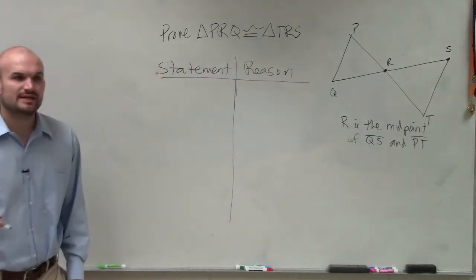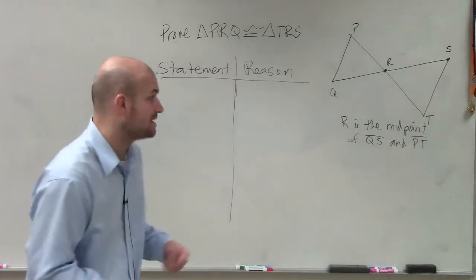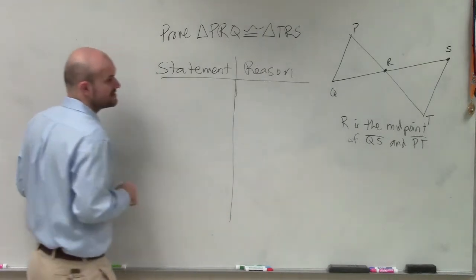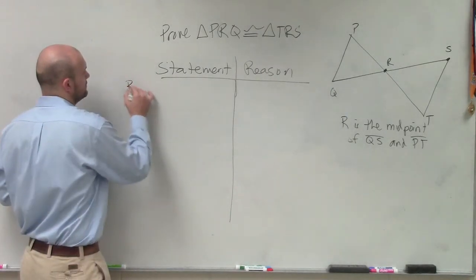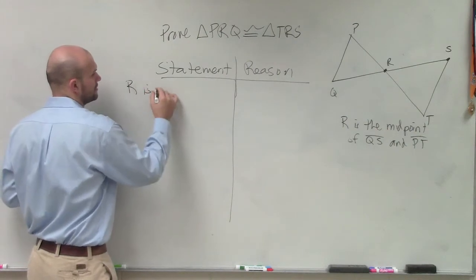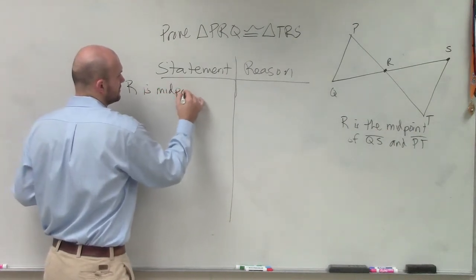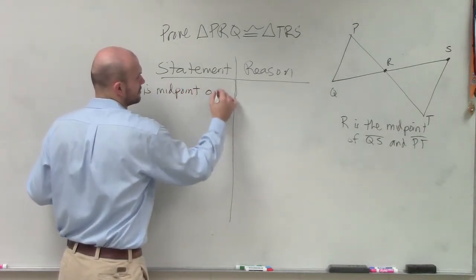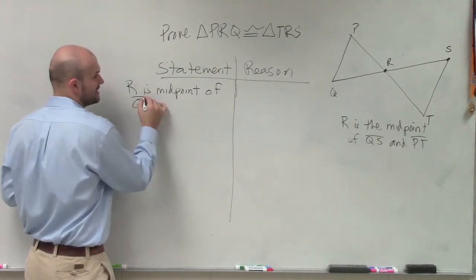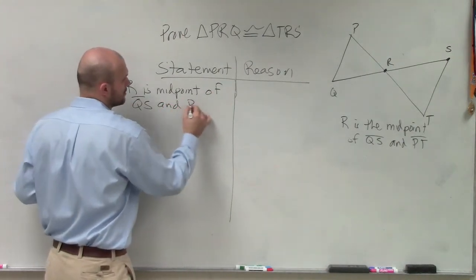Again, ladies and gentlemen, what we need to do is write in what is given to us. In this case, we know R is the midpoint of QS and PT. R is the midpoint of line QS and RT.